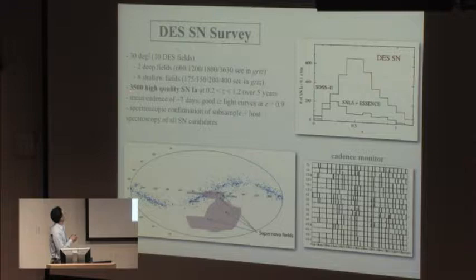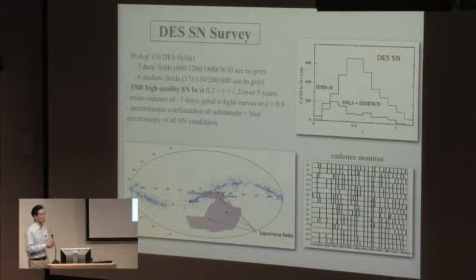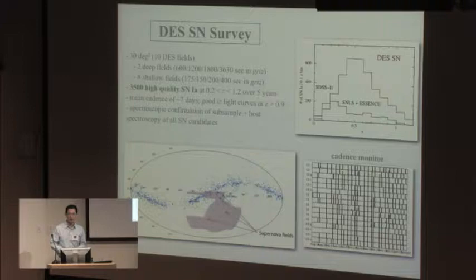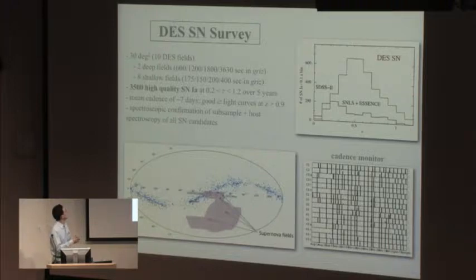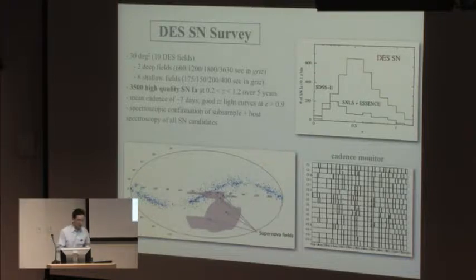Over five years we expect to find about 3,500 high-quality type 1A supernova light curves between redshift 0.2 to 1.2. 3,500 type 1As over five years is too many to follow up spectroscopically. You can't get a spectrum of every single one because it's too resource intensive.